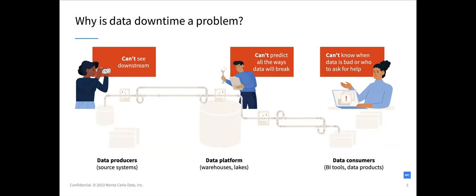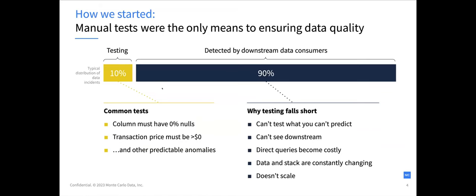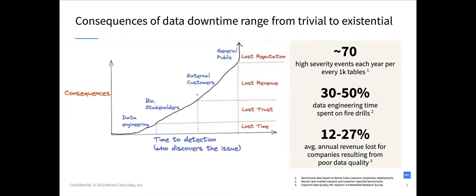Data engineers tend to be caught in the middle — they own the data platform, the warehouse and lakes, and can't predict all the ways that data will break. Typically in the past, this was solved via manual testing, and we've seen that manual testing barely covers 10% of the space. What you generally find is your data incidents are found by downstream consumers, resulting in a loss of trust in data. About 30% to 50% of engineering time is lost to data incidents, and they scale up to revenue losses, loss of reputation, and loss of trust.